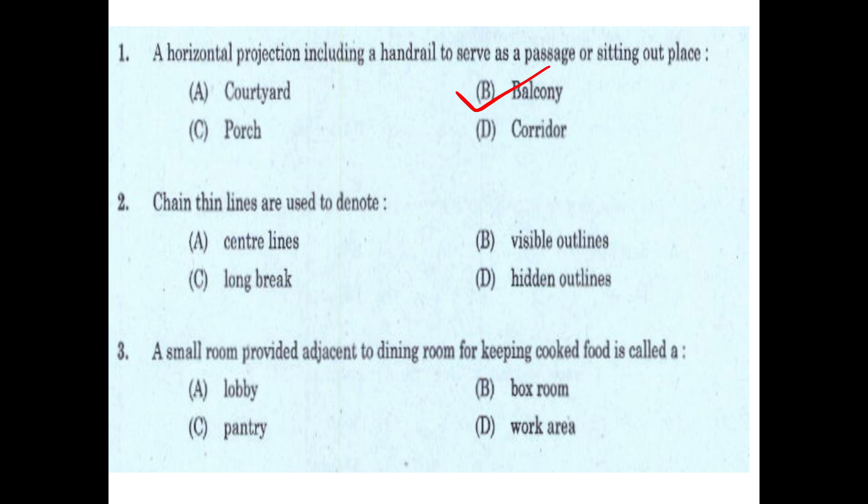Option B is balcony. A horizontal projection including a handrail to serve as a passage or sitting-out place is a balcony. Second question: chain thin lines are used to denote — center lines, visible outlines, long break, or hidden outlines. The answer is center lines.